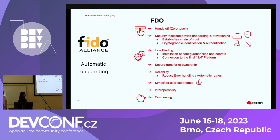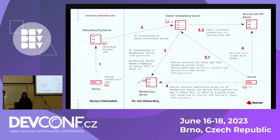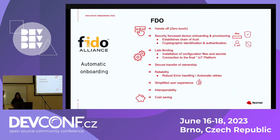One of the features most spoken about in FDO is late binding, which solves a lot of problems related to onboarding in the industry. When the device is manufactured, the device does not know which platform it is going to be onboarded to or the configuration it will onboard with. This can be decided at later stages when the device actually goes to the onsite. This feature allows flexibility in terms of device management, which is very useful. FDO also provides reliability — every time FDO runs, it works the same way for all devices.